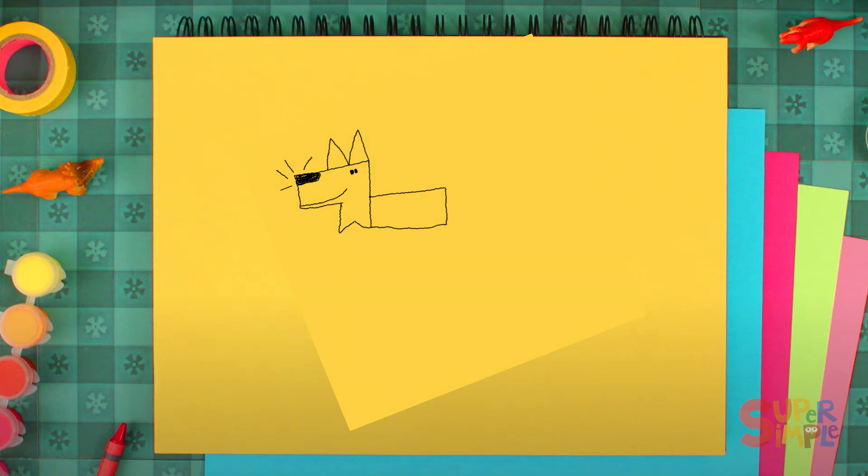Let's draw the four legs. Then let's make some tiny lines for his toes.